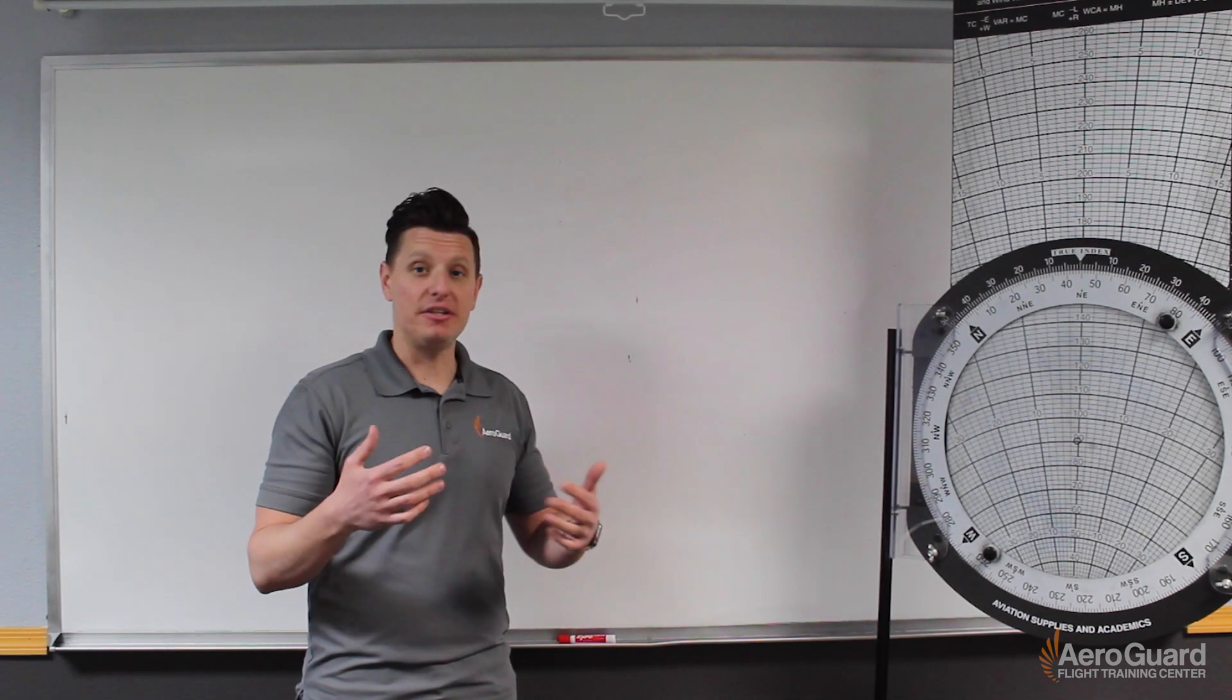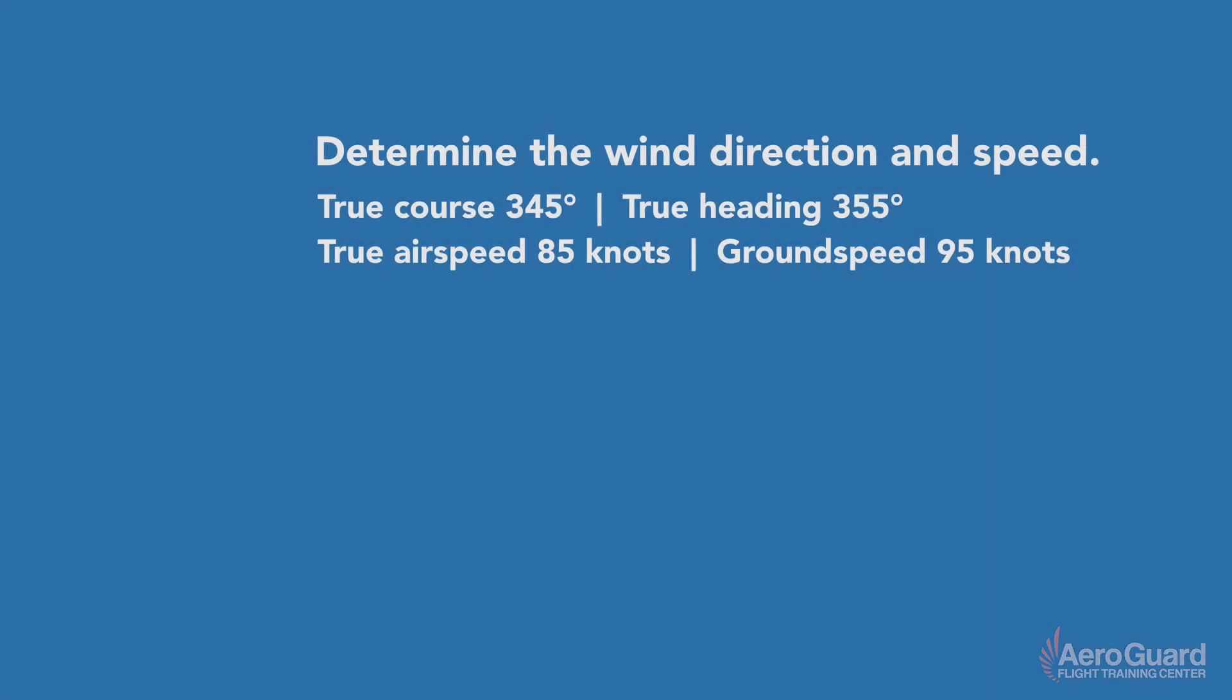To help us learn how to use this E6B, we're going to use an example problem from the FAA Knowledge Test Bank. So determine the wind direction and speed, and then it tells us the true course is 345 degrees, the true heading is 355 degrees, the true airspeed is 85 knots, and the ground speed is 95 knots.